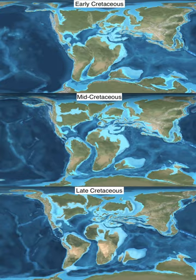Mid-ocean ridge activity, or rather the circulation of seawater through the enlarged ridges, enriched the oceans in calcium, making the oceans more saturated as well as increasing the bioavailability of the element for calcareous nanoplankton. These widespread carbonates and other sedimentary deposits make the Cretaceous rock record especially fine. Famous formations from North America include the rich marine fossils of Kansas' Smoky Hill chalk member and the terrestrial fauna of the late Cretaceous Hell Creek formation. Other important Cretaceous exposures occur in Europe and China. In the area that is now India, massive lava beds called the Deccan Traps were erupted in the very late Cretaceous and early Paleocene.